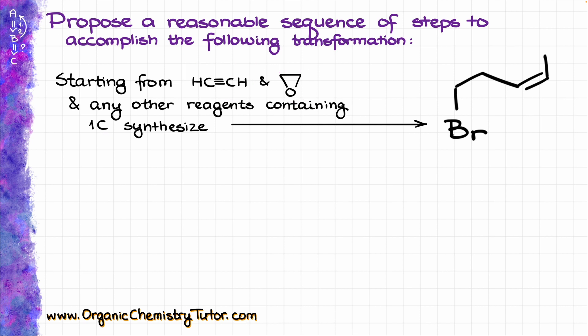Let's look at our molecule and try to break it down into building blocks so we can see how we can incorporate the starting material pieces into that. First of all, one thing that jumps at me is this double bond over here. This is a cis double bond, which is most likely going to be coming from the acetylene, and we know that we can fairly easily accomplish that by using the hydrogenation on the Lindlar's catalyst.